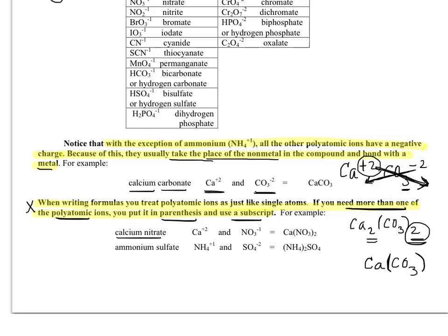Calcium has a plus two charge. NO3, we can find on the list, has a minus one charge. And so when we swap and drop, we have just one calcium. But when this two gets brought down here, we need to remember not to get rid of that three. That's part of what nitrate is.